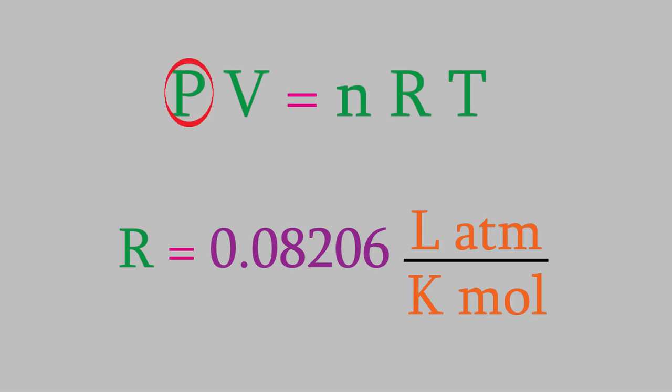So the pressure needs to be in atmospheres. If you use millimeters of mercury, the units won't work out and your answer will be an incorrect number. In the same way, the volume needs to be in liters, and the temperature needs to be kelvin. Any other units will give you an incorrect result. So what can we do with this?